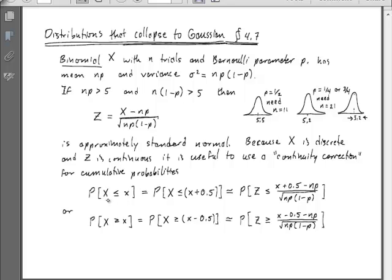If we say that the discrete value has to be less than x, that would be the same as saying the discrete value is less than x plus 0.5 because there's no discrete numbers between x and x plus 0.5. So we can integrate our continuous variable up to Z that corresponds to x plus 0.5. This is called a continuity correction.